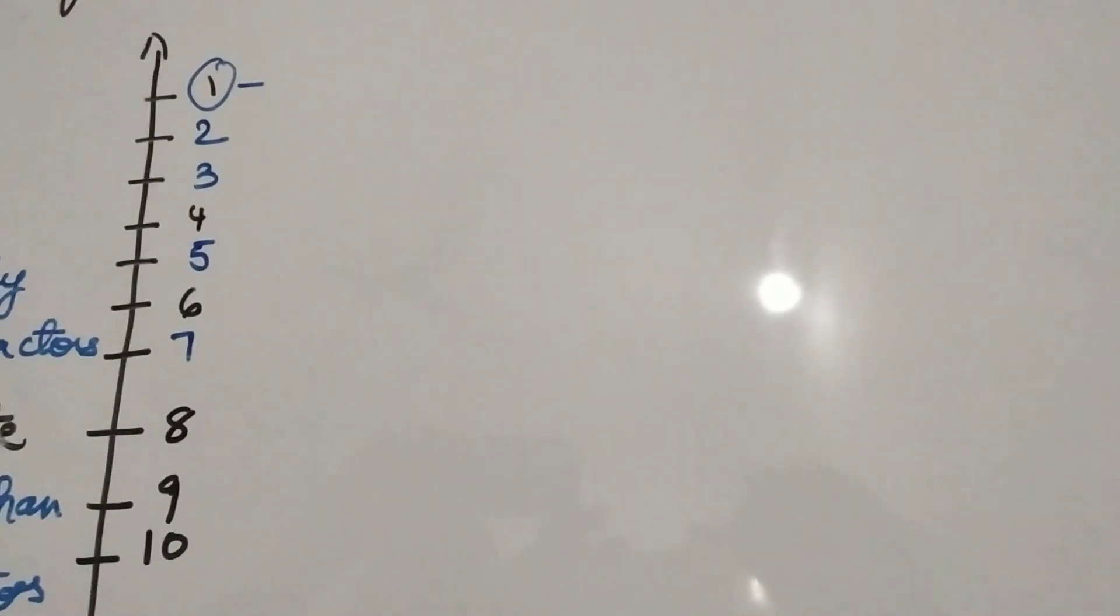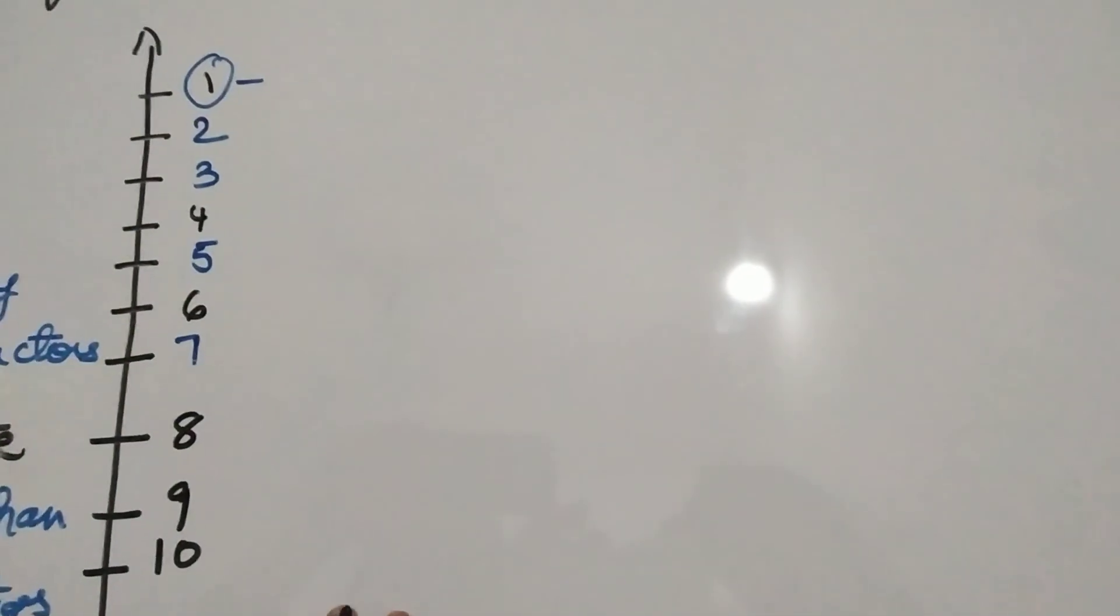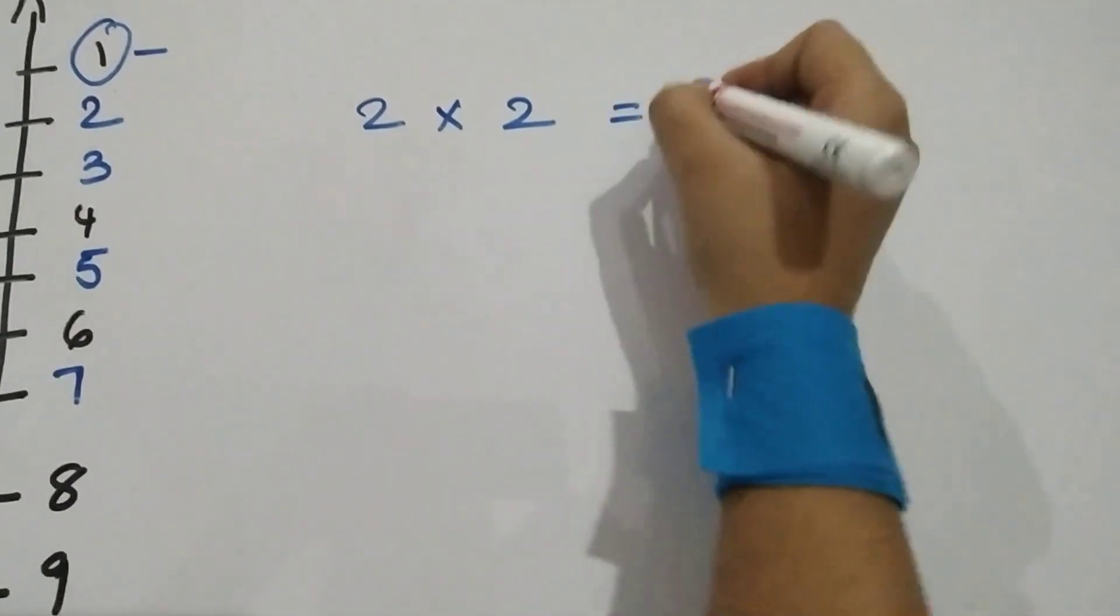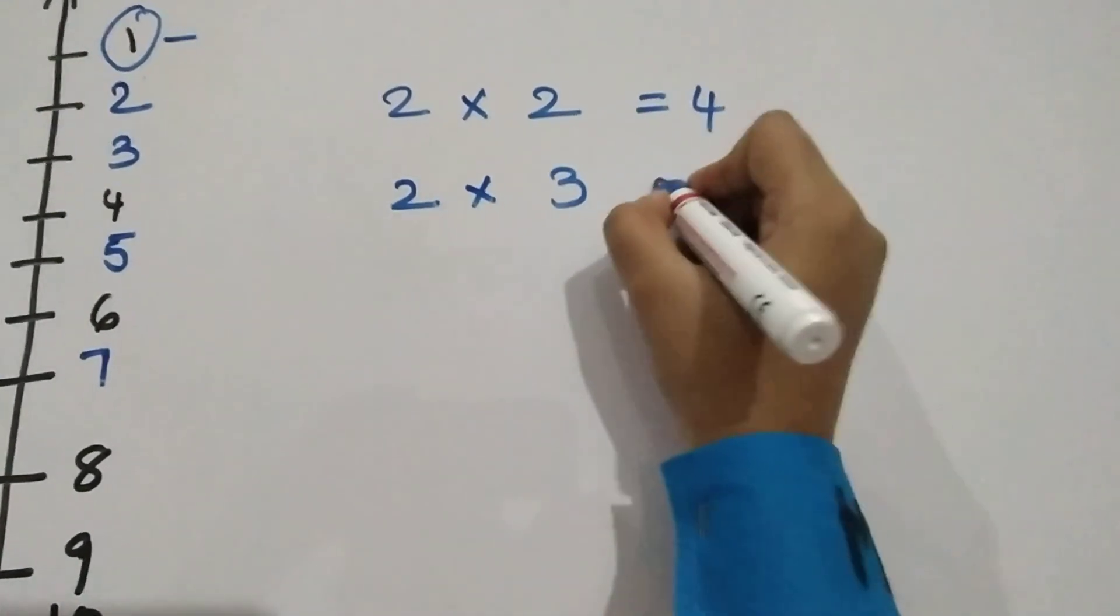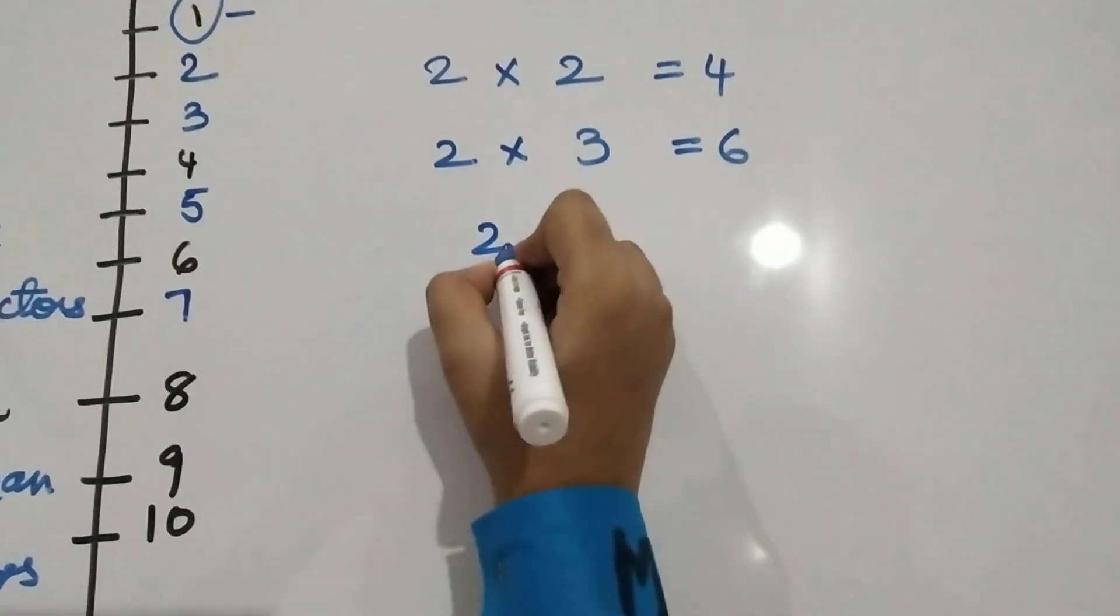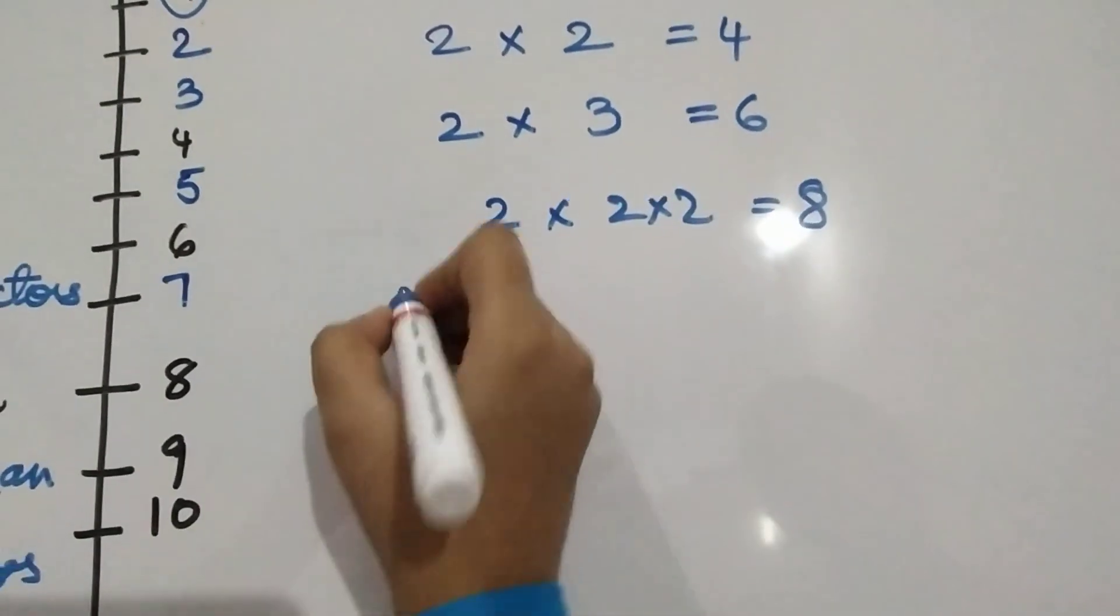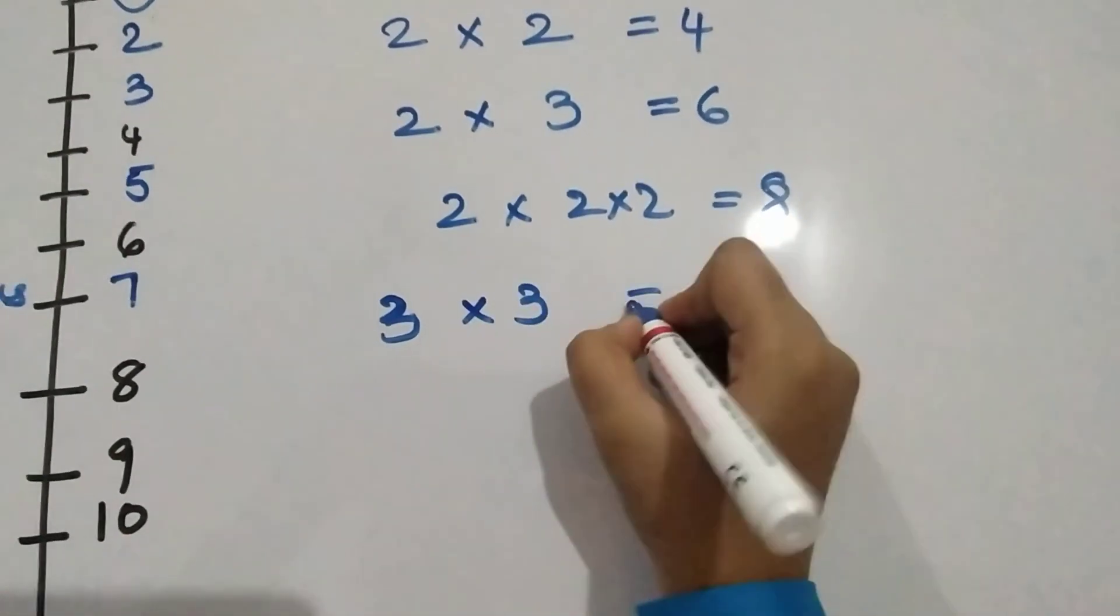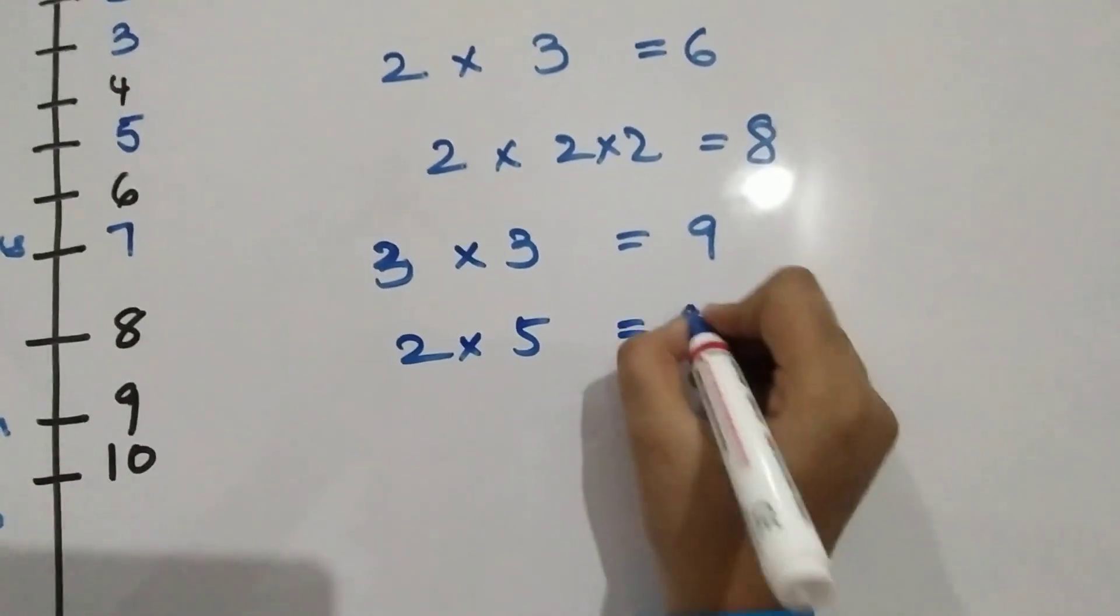So here I am going to show you an interesting pattern. When we multiply primes we get composite numbers. So 2 times 2 which is 4, 2 times 3 is 6, 2 times 2 times 2 is 8, 3 times 3 is 9.